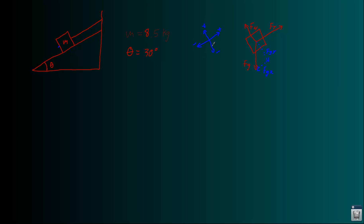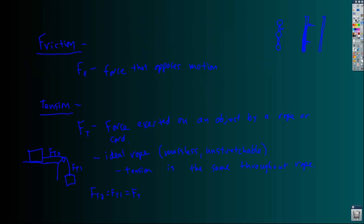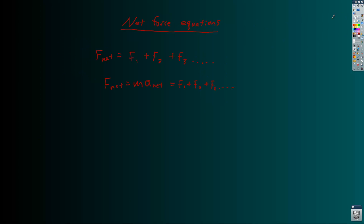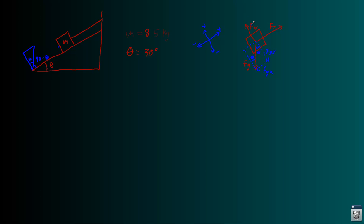So this would be FGX and FGY. I call this Y because this is like pulling the block into the plane, which to me is very similar to if you have a block on a table — gravity will pull the block into the table on a flat surface. But if you pull something along the table, that's typically the X direction. And so the component of gravity pulling this down the ramp, we would call FGX. So I call this FGX and FGY.